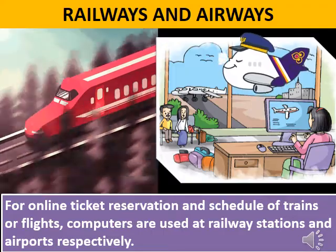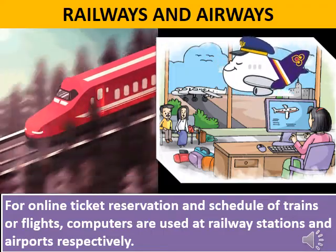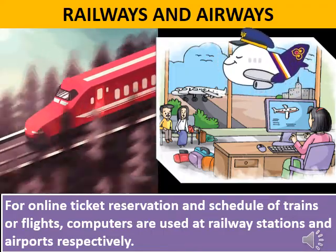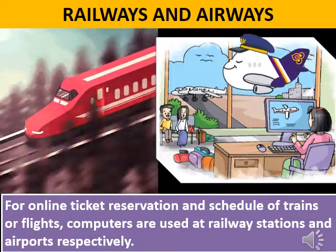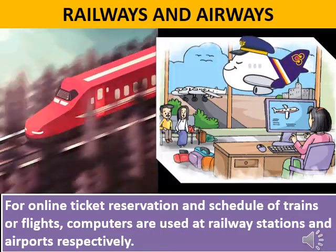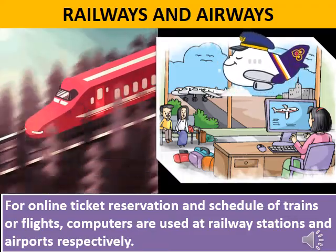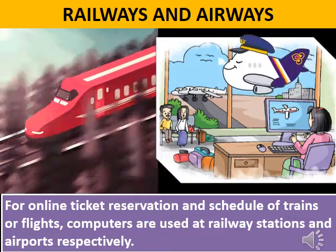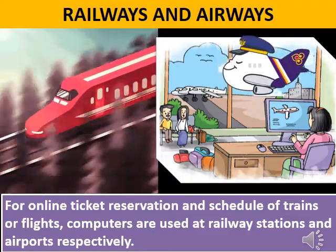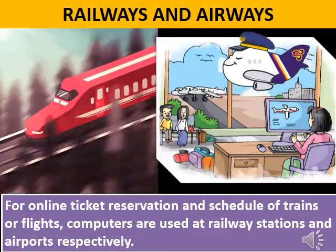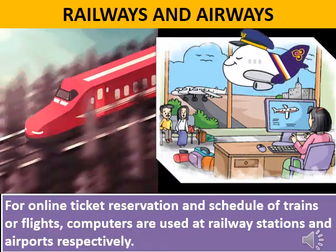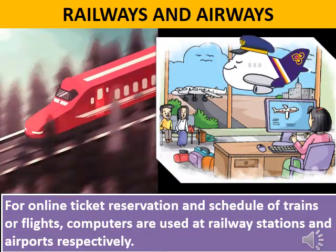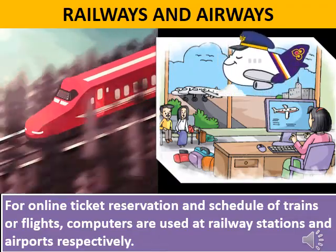The fifth application is railways and airways. For online tickets, reservations, and schedules of trains or flights, computers are used at railway stations and airports respectively.